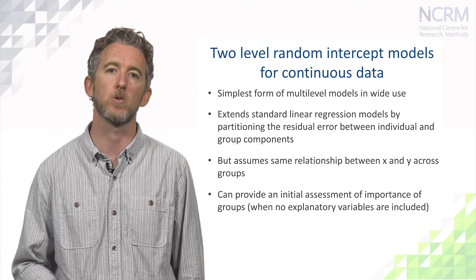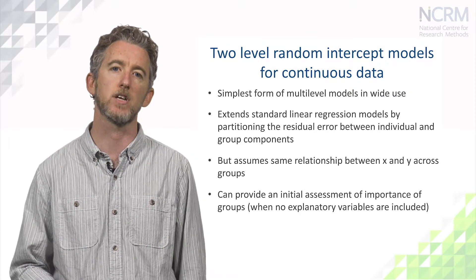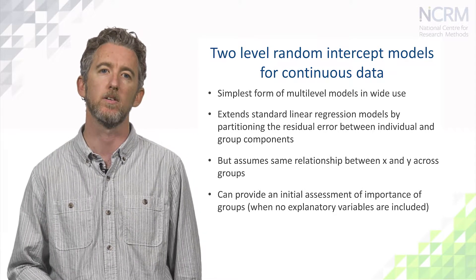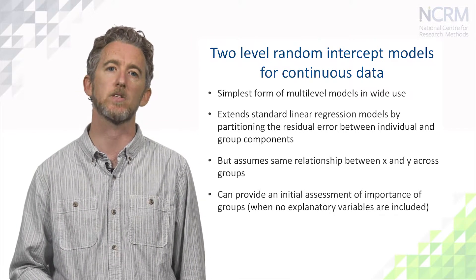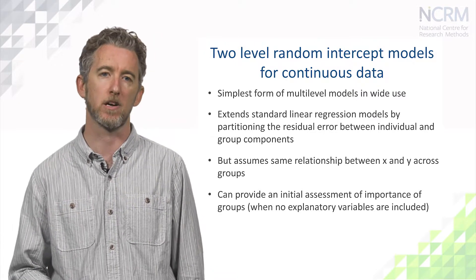Two-level random intercept models extend standard linear regression models by repartitioning the residual error between an individual and a group component. This can allow us to gain an initial picture of the importance of groups when no explanatory variables are included.